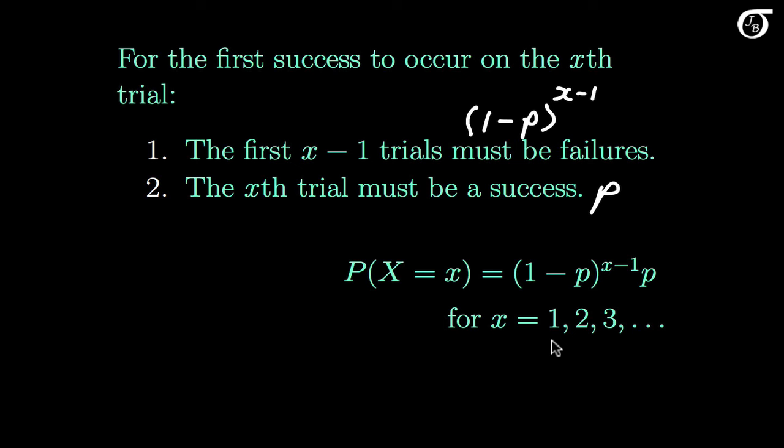What values can the random variable X take on? We could get a success on the first trial, so x could equal 1; we could get a failure and then a success, so x could equal 2, and so on. There is no upper bound on the values X can take on. The geometric distribution has a single parameter, the probability of success p. The mean and variance are functions of p: the mean is 1/p, and the variance is (1-p)/p².